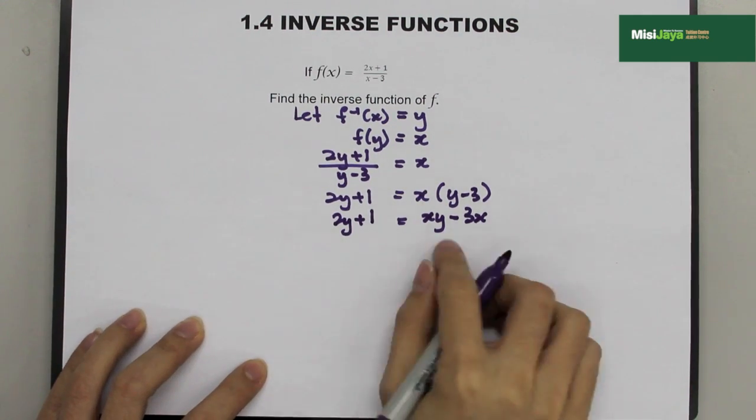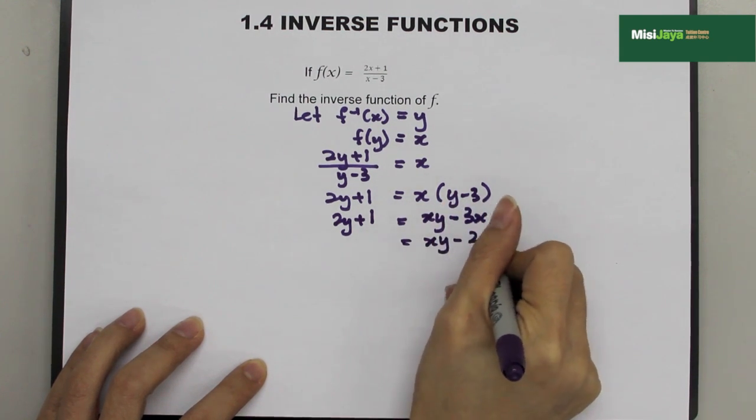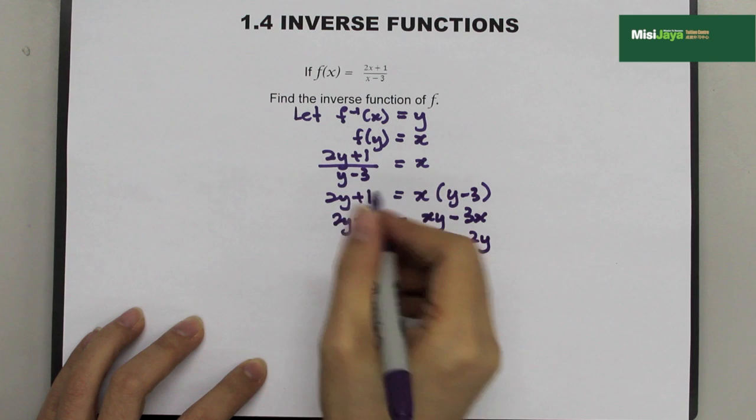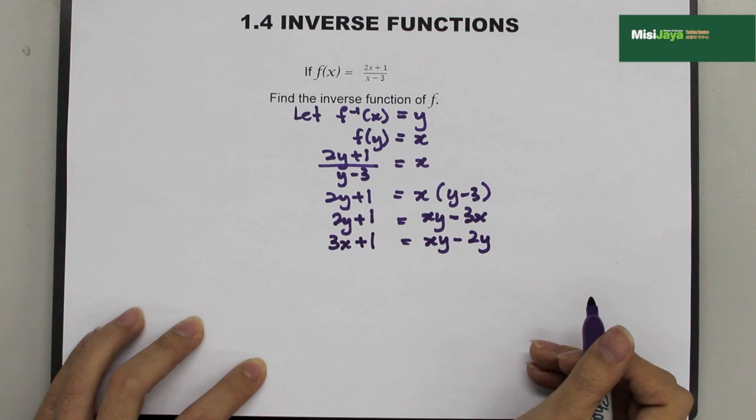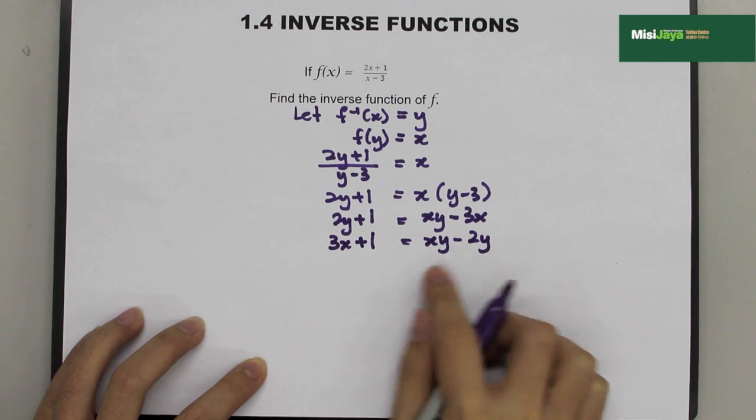Next, we try to gather all the y to one side. It becomes xy - 2y. Then, we bring over -3x to the left hand side. It becomes 3x + 1. Next, we see there are 2 terms in terms of y.